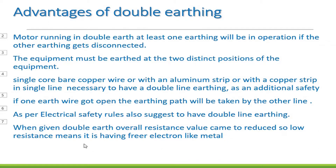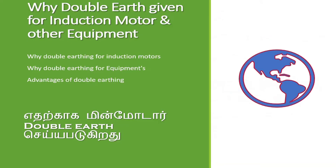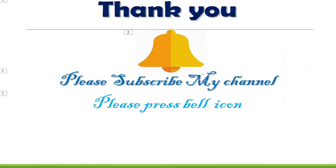When double earthing is given, the overall resistance value is reduced. Low resistance means free electron flow, like in a metal conductor. That is the reason for providing double earthing to motors and all other equipment. Thank you. Please subscribe to my channel and press the bell icon.